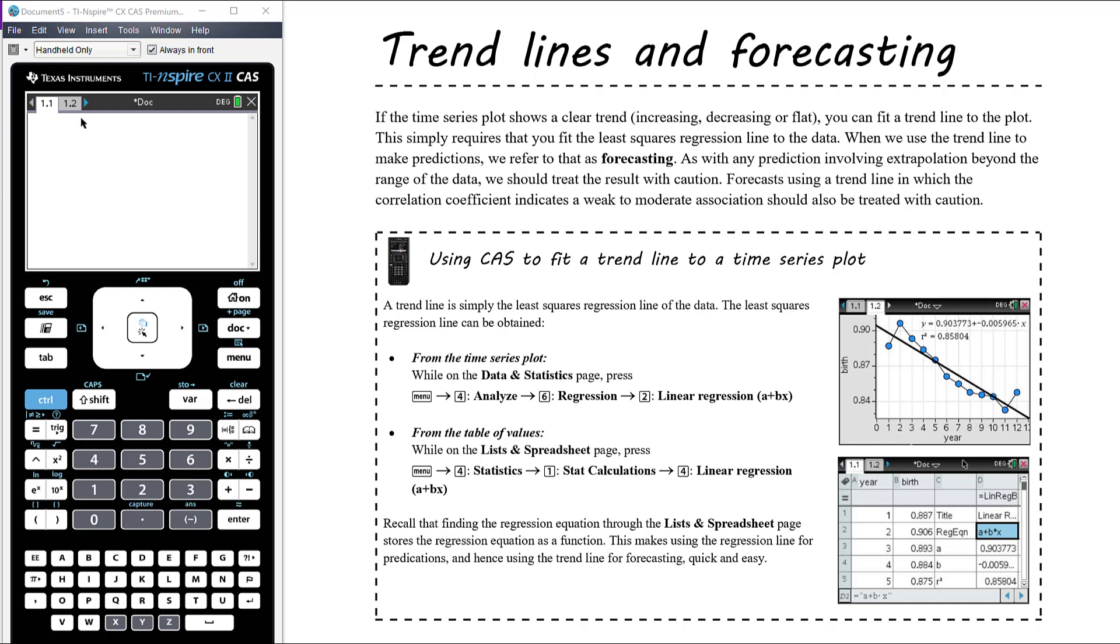Okay, so in this video we want to look at trend lines, fitting a trend line to our time series plot. I mentioned previously that's just fitting a least squares regression line, which we're already familiar with, and then forecasting. So if the time series plot shows a clear trend, increasing, decreasing or flat, i.e. no trend, then we can fit a trend line to the plot.